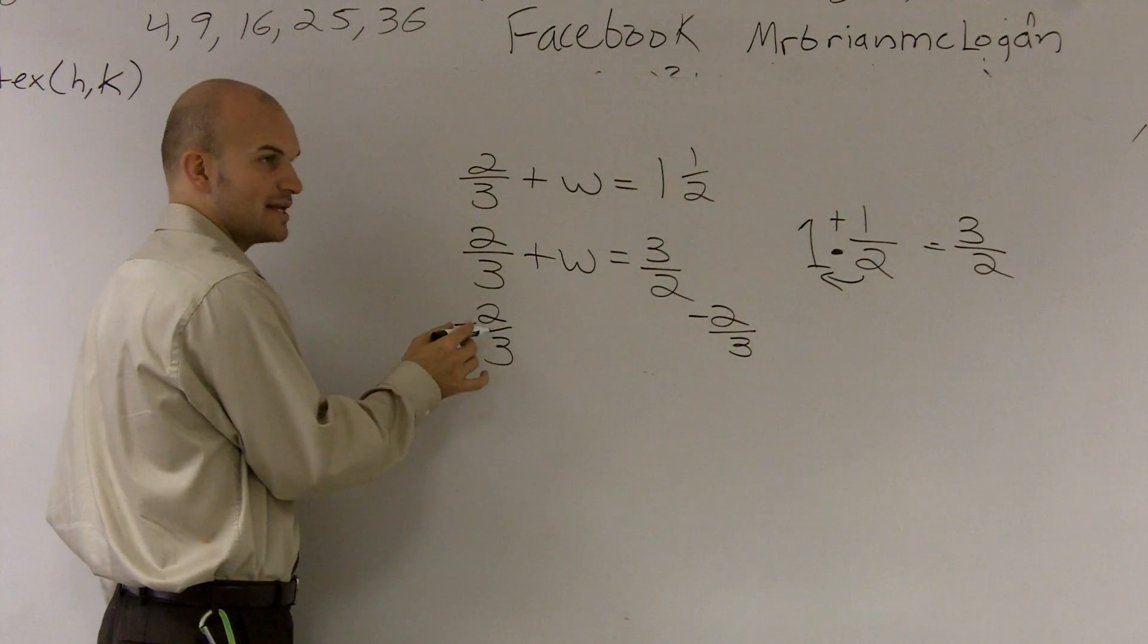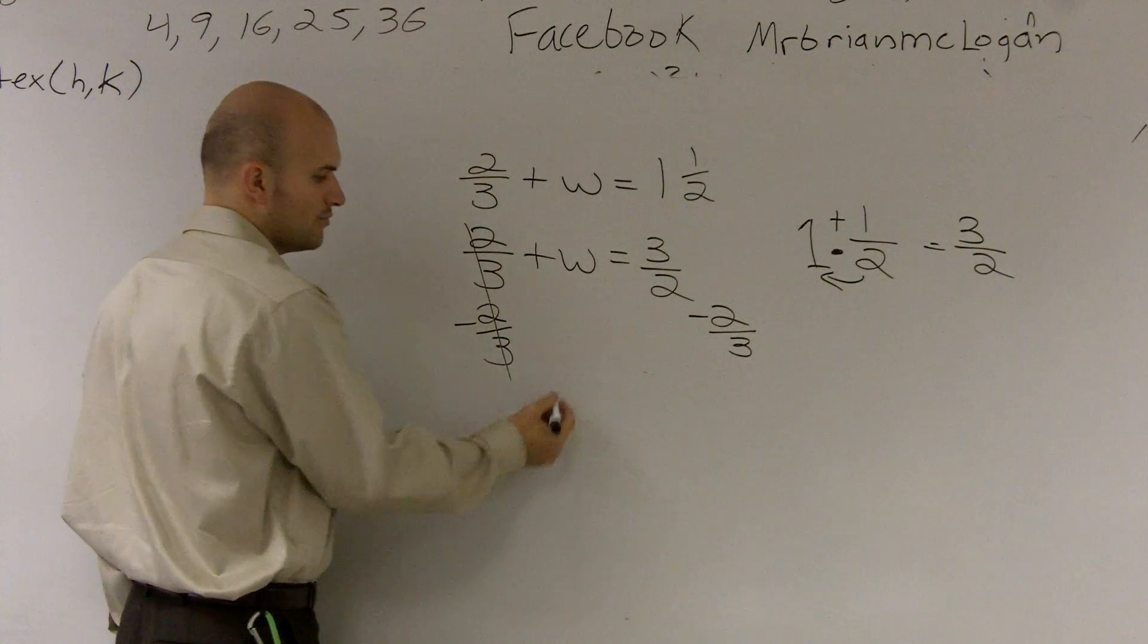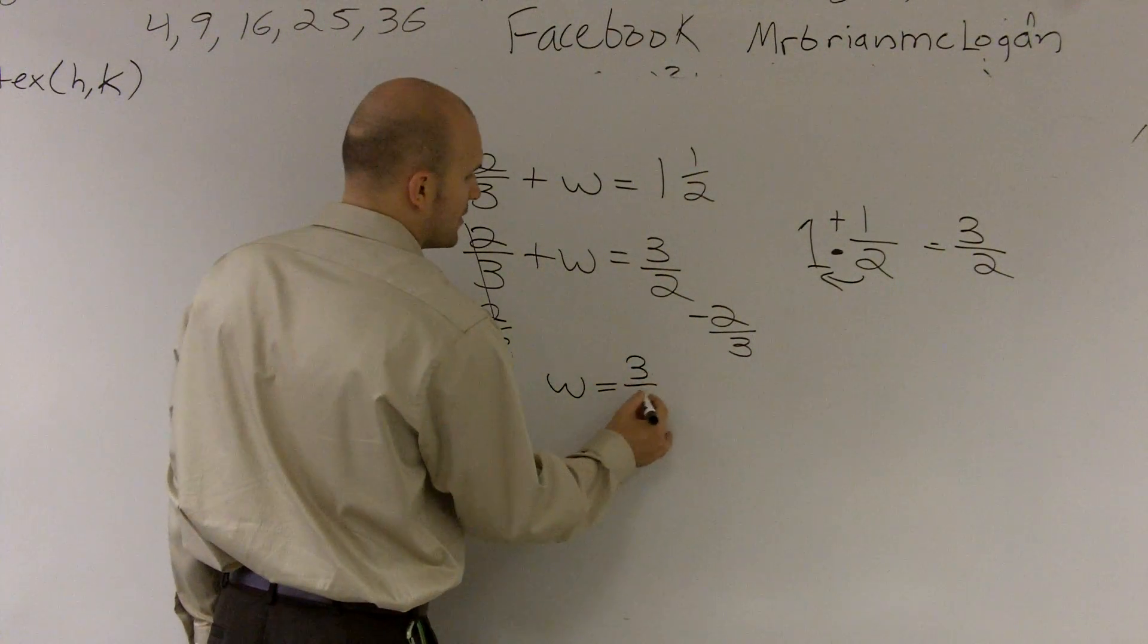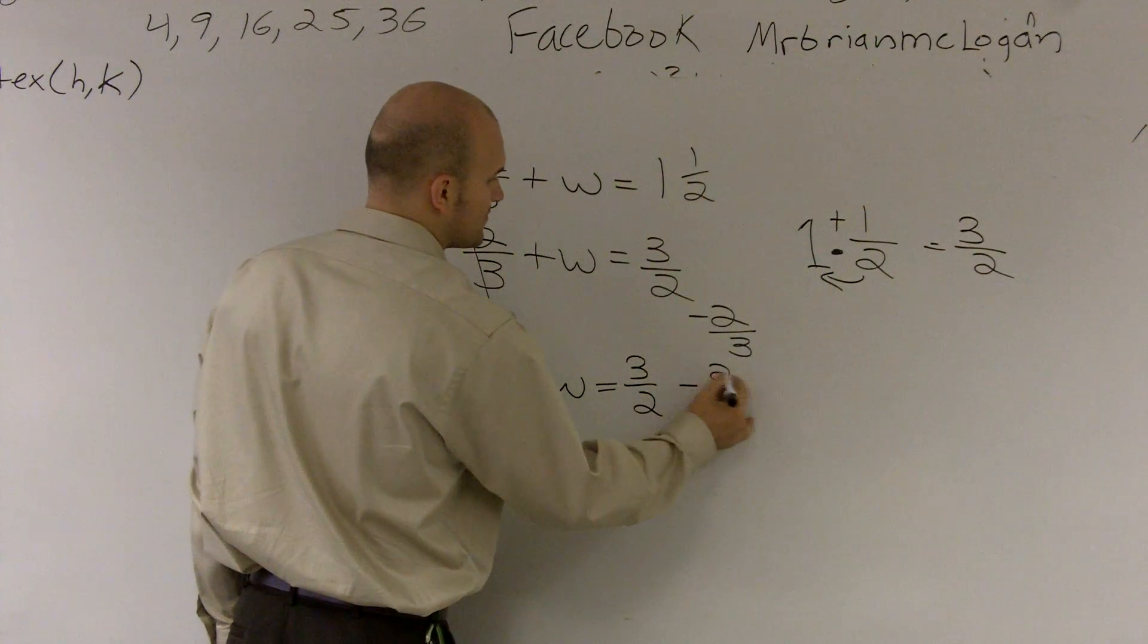Any number subtracted by itself is going to remain zero. We don't need to write zero anymore. So we have w equals 3 halves minus 2 thirds.